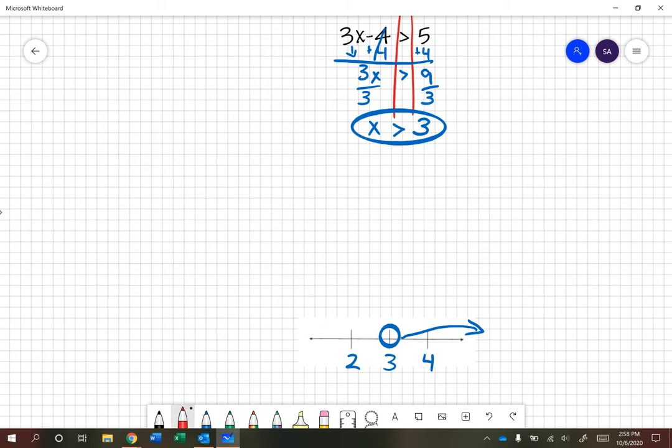Always a good idea to check your work. So if I were to plug a 4 into my original inequality, it should be a solution to 3x minus 4 is greater than 5. So off to the side here, I'm going to do 3, and I'm going to plug that 4 in. Minus 4 is greater than 5. 3 times 4 is 12 minus 4. So we have 8 is greater than 5. Is that a true statement? Yes, it is. So that is true that it is a solution to 3x minus 4 is greater than 5.